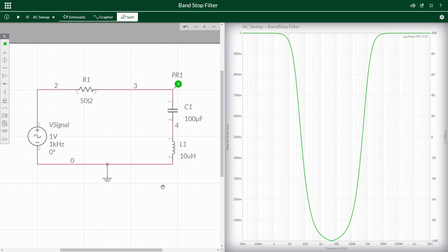I will, however, quickly show you one method of making a band stop filter. This method uses not only a resistor and a capacitor, but also an inductor, and as you can see, the low frequencies are passed, the middle frequencies are fully attenuated, and the high frequencies are once again passed.